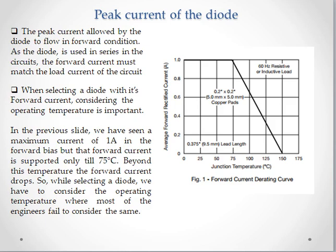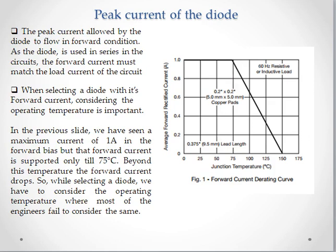However, this 1 amp is not the current allowed at all temperatures. This is shown through a small graph in the datasheet. The maximum current is 1 amp, but as the temperature increases — this is a graph of temperature versus current — around 75 degrees centigrade the current starts dropping. That means if the operating temperature goes beyond 75°C, the forward current of 1 amp no longer stands.